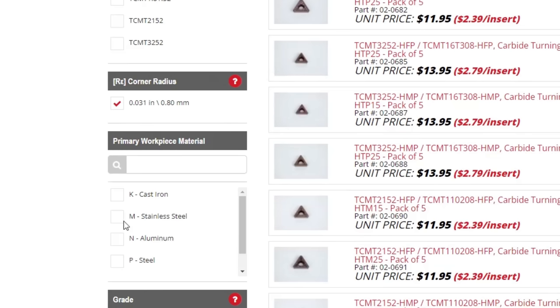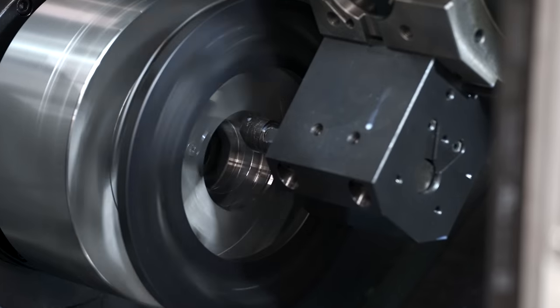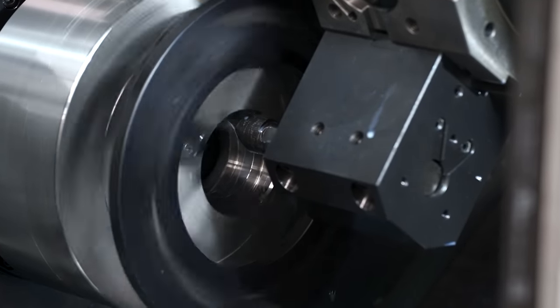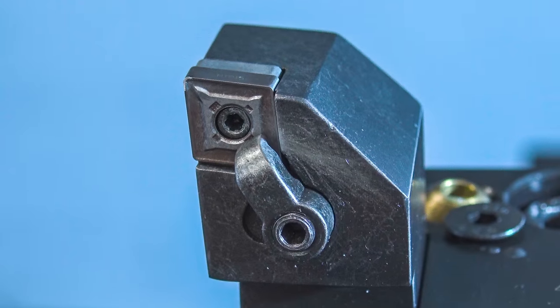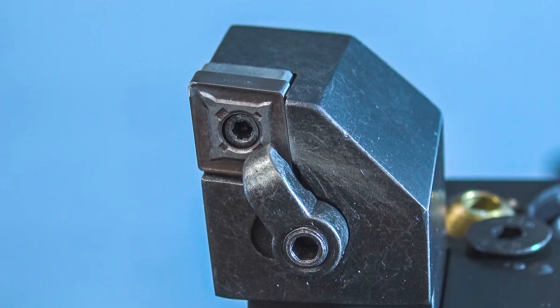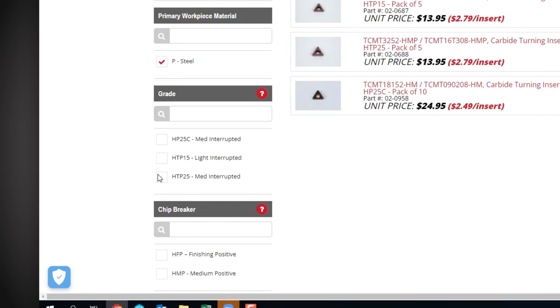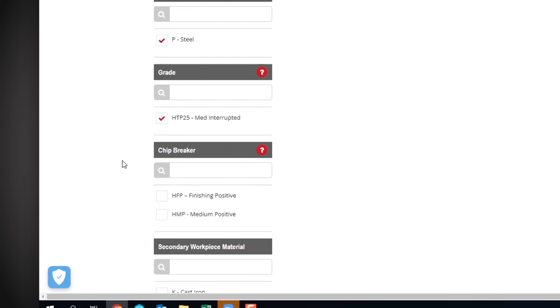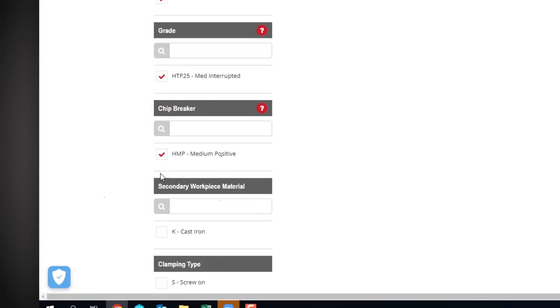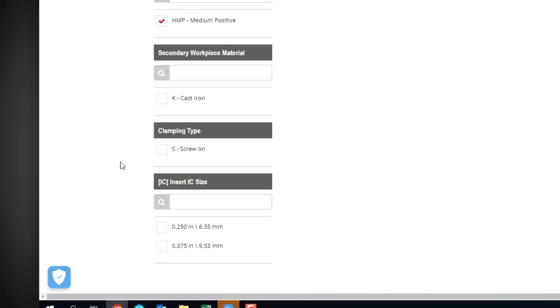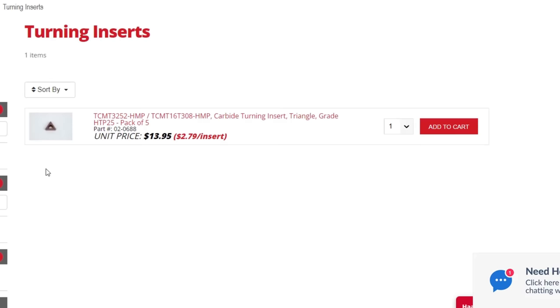We are cutting steel, so I'll select that as my primary workpiece material. Now, interrupted cutting is unavoidable when boring jaws on a lathe. Even on the smallest of cuts, that intermittent, harsh impact can easily and quickly damage your insert. Therefore, for the remaining filter options, I am going to choose the grade HTP25 and chip breaker HMP. Those are the most suitable for interrupted cutting. After selecting my insert size, I'm left with this insert.